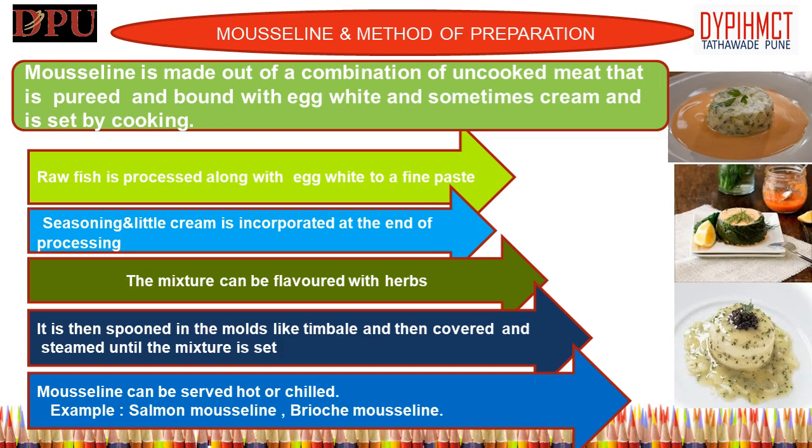Mousseline is prepared by processing ground meat and cream in a food processor; often egg whites are added to lighten and enrich the mixture. It should be extremely smooth in texture and have the consistency of a very thick sauce or paste, then placed into molds to set by cooking. Mousseline force meat can be served hot or cold. The dish may be served individually, or a large mold may be made so that guests can cut servings for themselves.